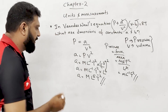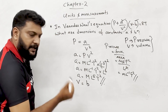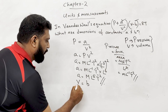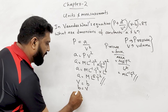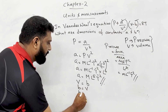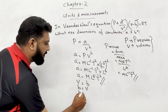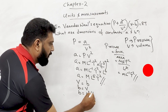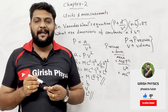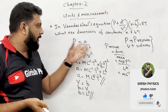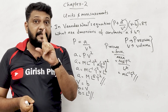For constant B: according to the principle of homogeneity, in the term (V − B), B must have the same dimension as V. Volume V has dimension L³, so the dimension of B is L³.